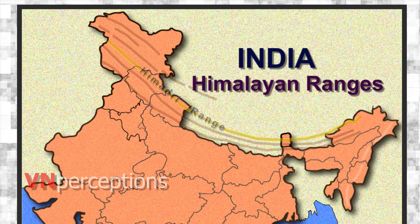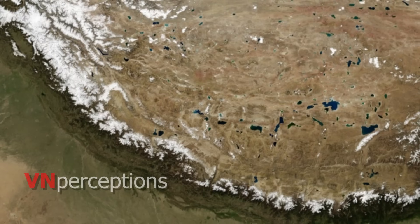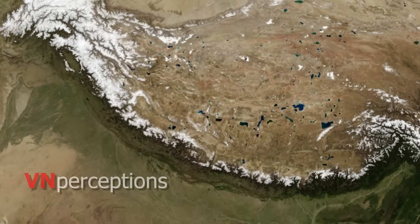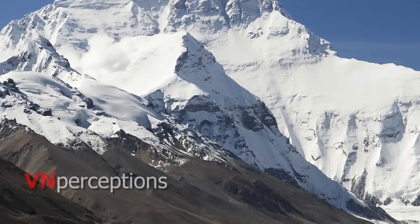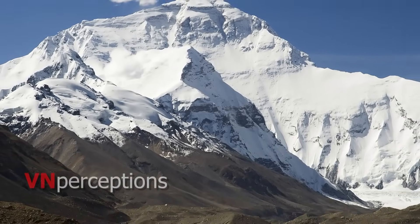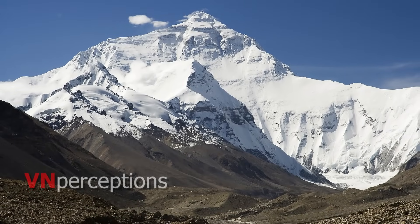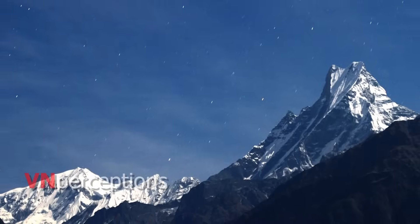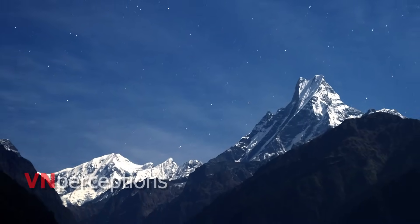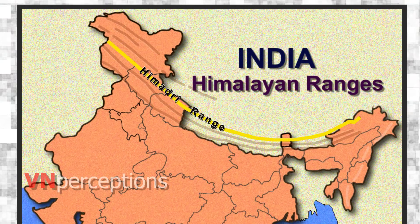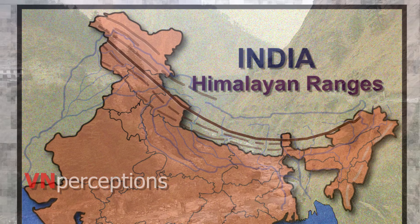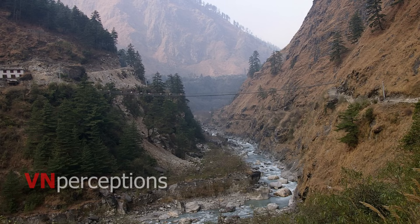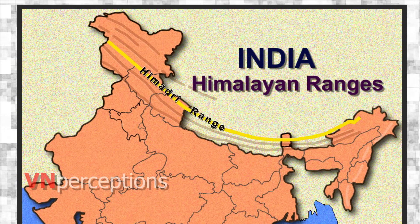The next one is the Great Himalayas or Himadri. This is the most continuous, loftiest and northernmost range of the Himalayas. The snow-clad mountain ranges rise in height up to 6,000 meters and many peaks exceed 8,000 meters. It is a source of a large number of glaciers of varying dimensions — a glacier refers to a huge mass of moving ice. Though described as the longest range, it is not continuous because a large number of rivers originating in the north cut across and form deep gorges moving towards the south. Compared to the other two Himalayan ranges, the Himadri is more massive.